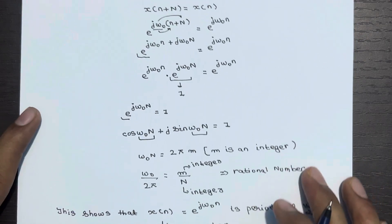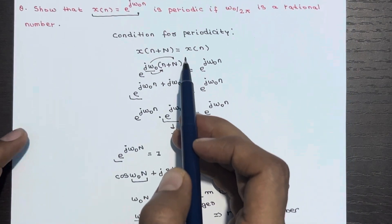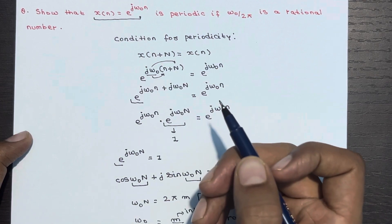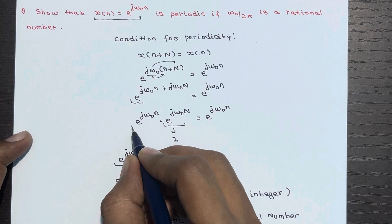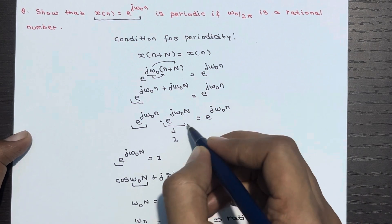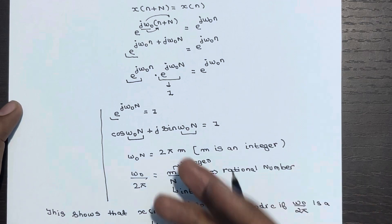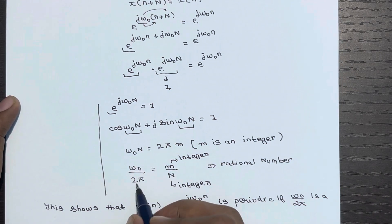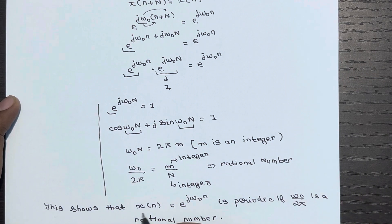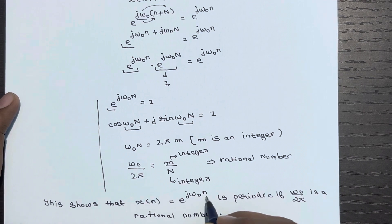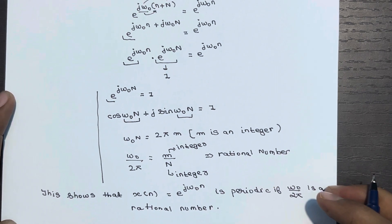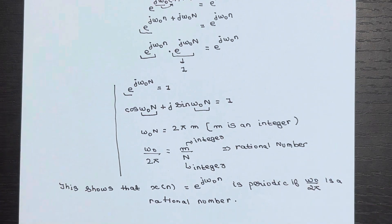So the story starts from the condition for periodicity X(n + N) = X(n). For the two expressions to be equal, e^(jω₀N) must equal 1, and that requires ω₀/2π to be a rational number. If you have any doubts you can ask in the comment section. That's all for today's lecture on periodic and aperiodic signals — in the next lecture we will discuss numericals on periodicity. Don't forget to subscribe to our channel.